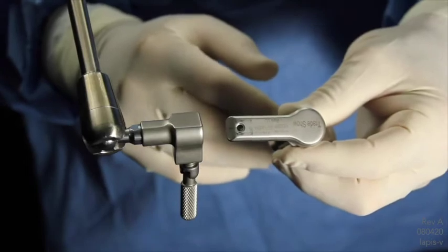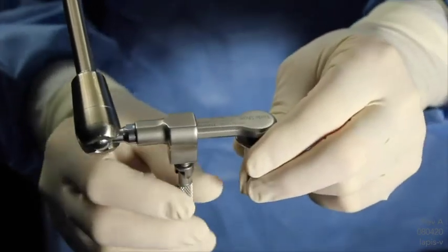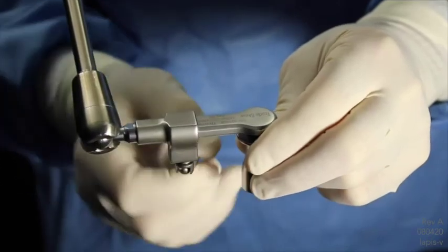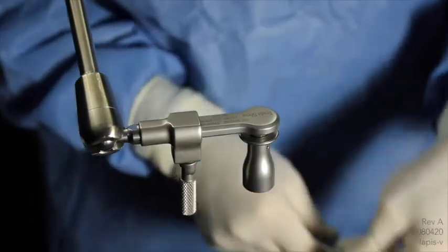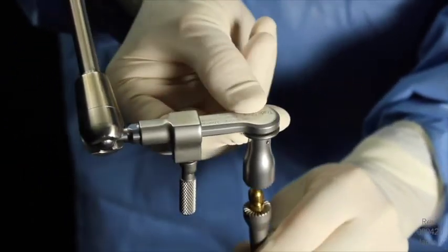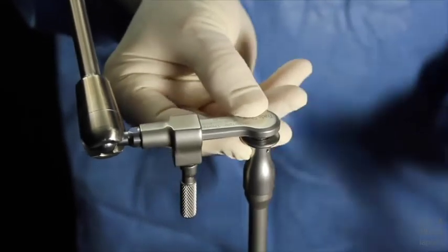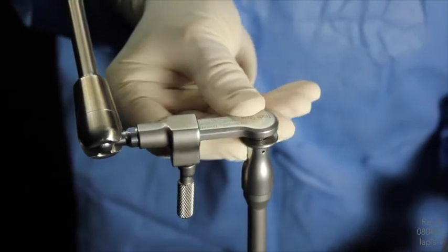The S-Lock Nathanson hook functions by simply inserting the adapter into the head of the articulating arm and tighten. Then, insert your Nathanson hook into the adapter and lock it into its desired position.